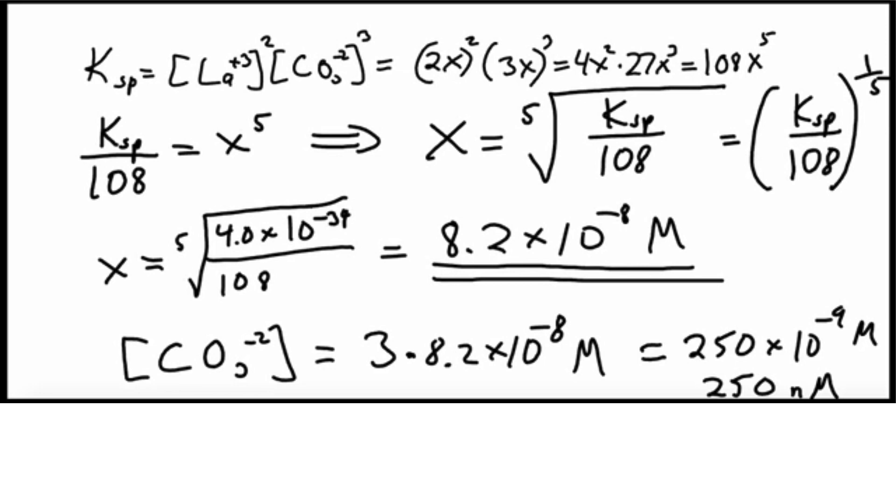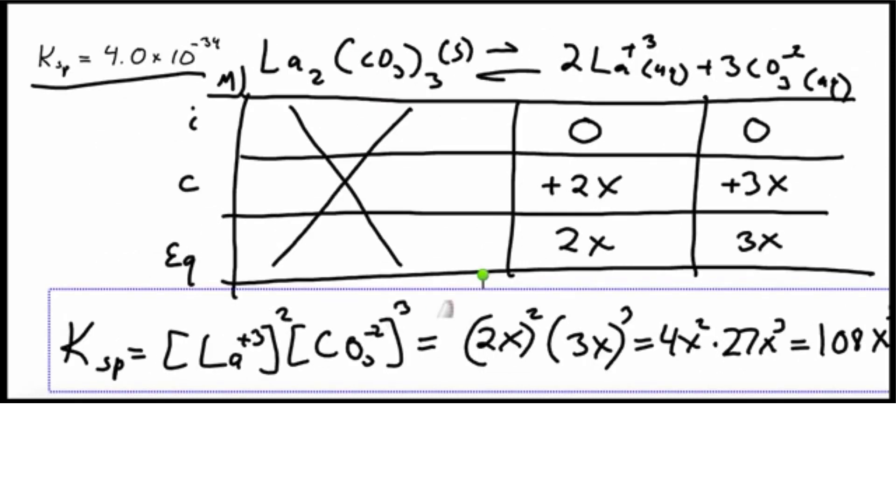One final point. On all of these notes, we should be putting little subscripts on here saying equilibrium. And that includes on the expression we had back here. We should have equilibrium here and equilibrium here. Because if we didn't specify that these concentrations were at equilibrium, then this isn't a K, it's just a Q. So make sure you write equilibrium subscripts on your expression so that you're specifying that you're talking about K and not just Q.